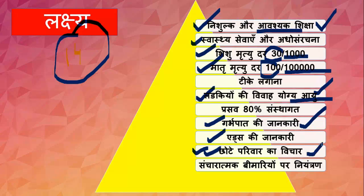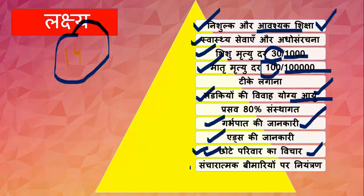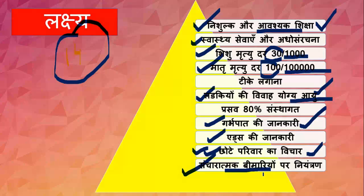This would draw the government's attention. Next point is Sancharatmak Bimaree Upan Niyantran (communicable disease prevention and control). These types of diseases are called Sancharatmak. The government has made a purpose and a plan for these diseases so that more people can be reached and this disease can be controlled. This covers almost 11 points, which you can write in your exam.